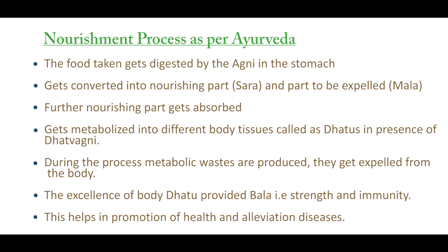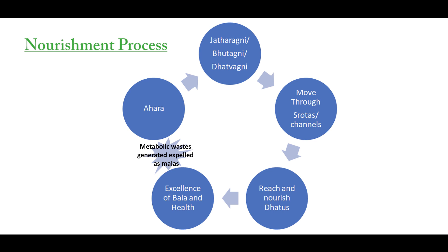This can be summarized in a diagram wherein ahara is taken, digested and metabolized by means of jatharagni, bhutagni, and dhatvagni. Further, these move into the different srotas or channels and reach the dhatus to nourish them. That leads to excellence of bala and health, while metabolic waste generated must be discarded from time to time.